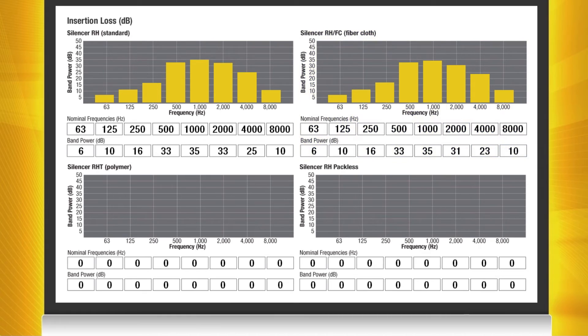As you can see the fiberglass cloth lined unit performs very similar to the standard RH fiberglass silencer. We recommend that you add a fiberglass cloth liner to silencers in applications with high air velocities.